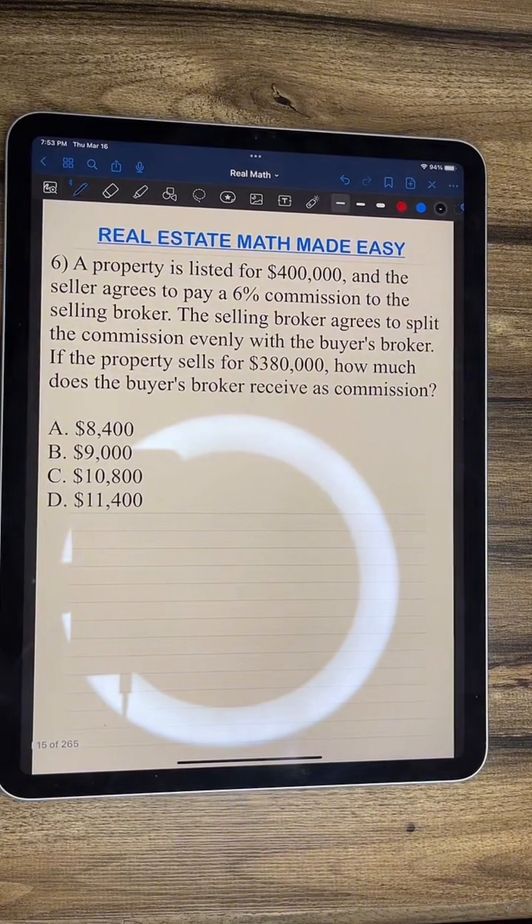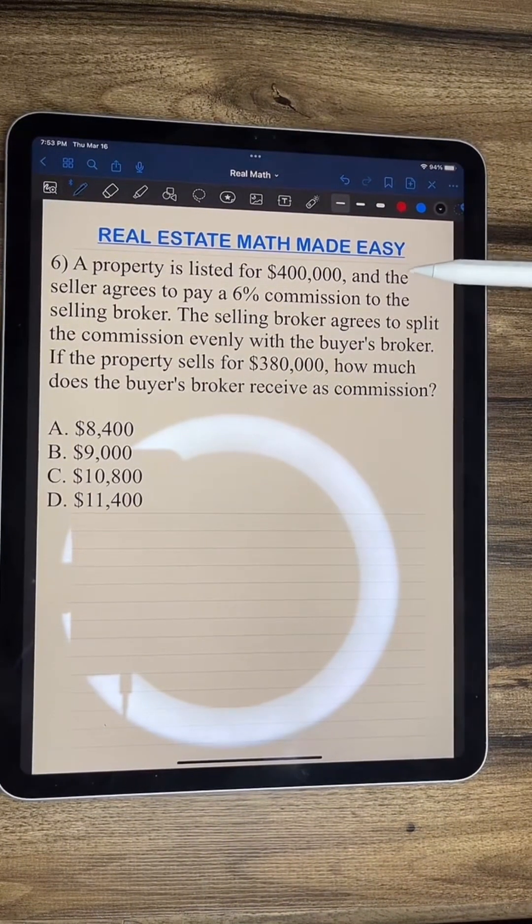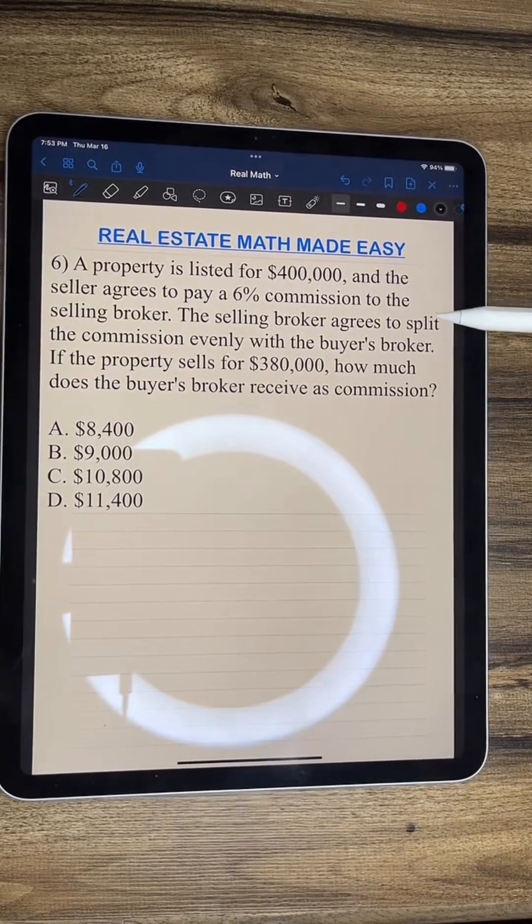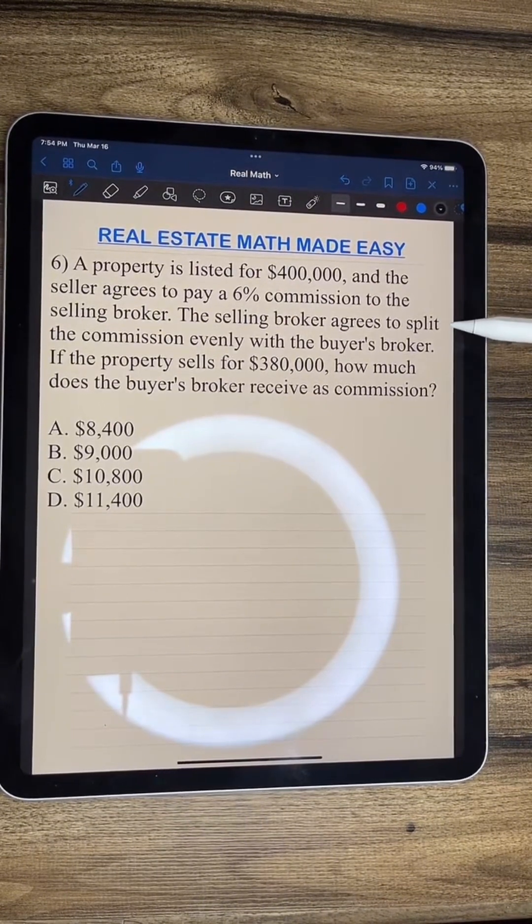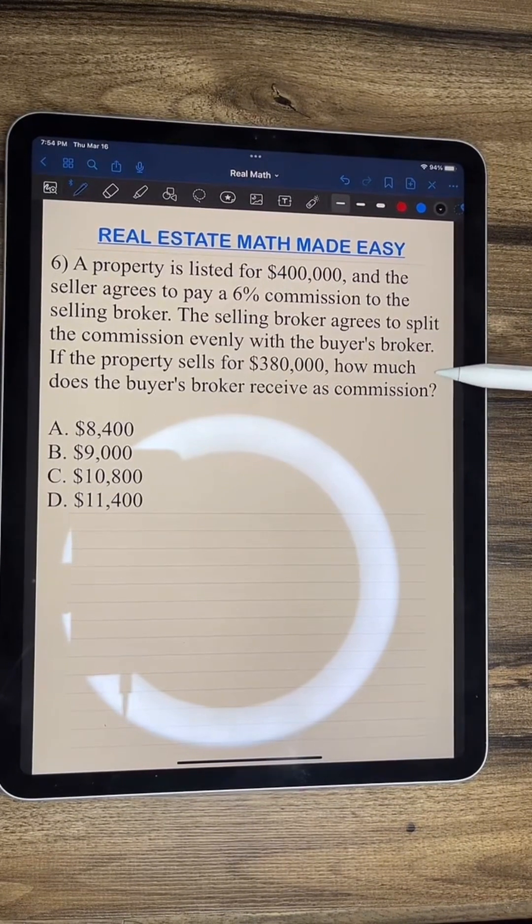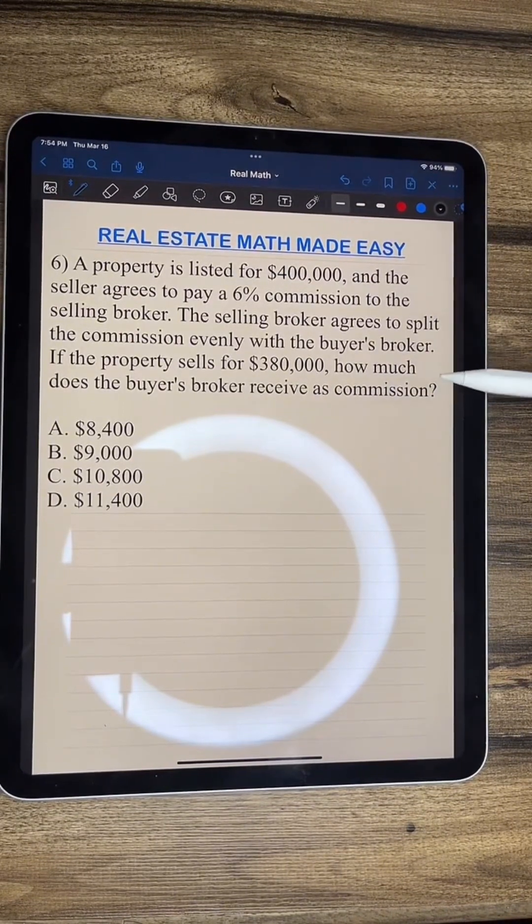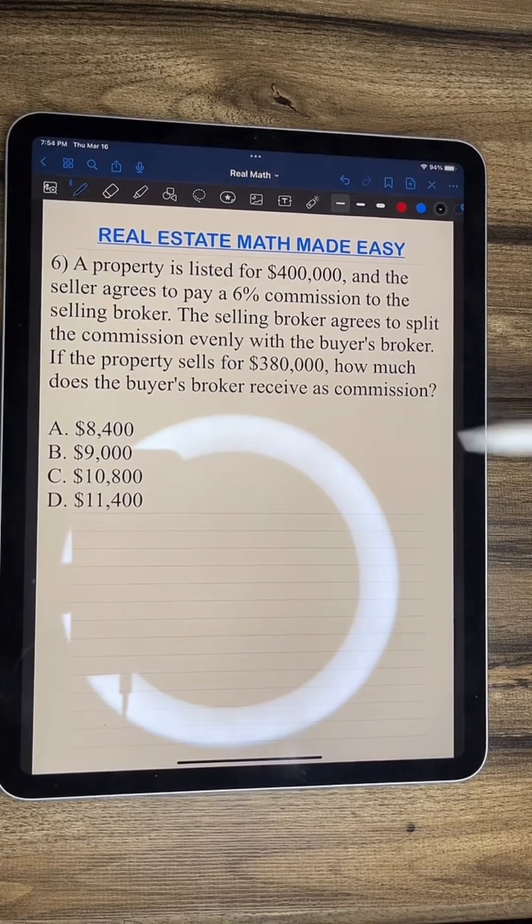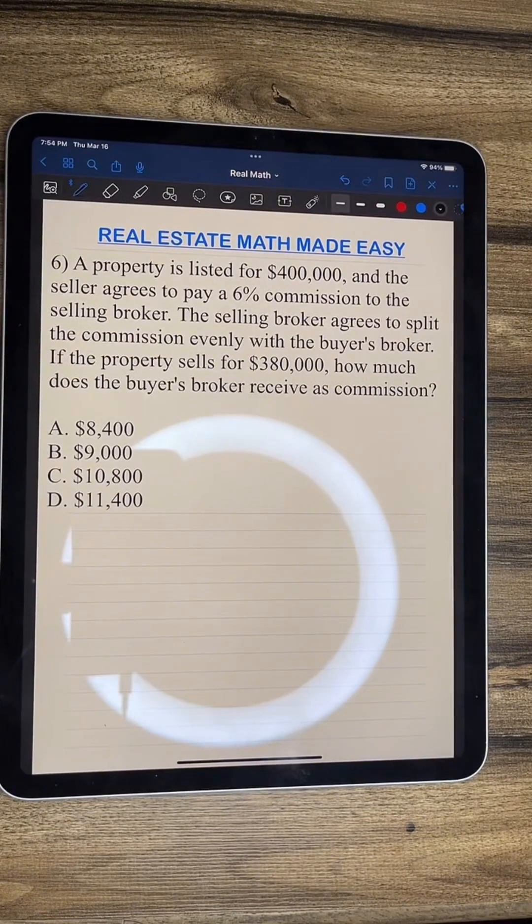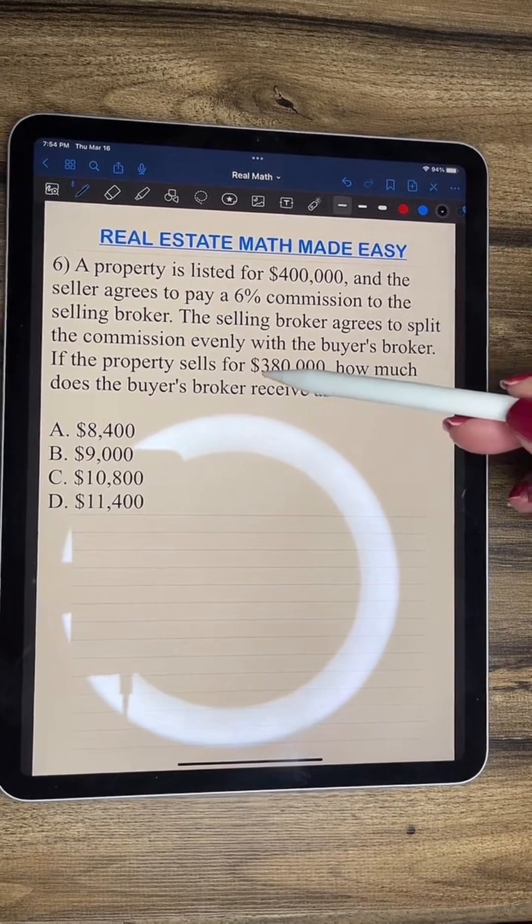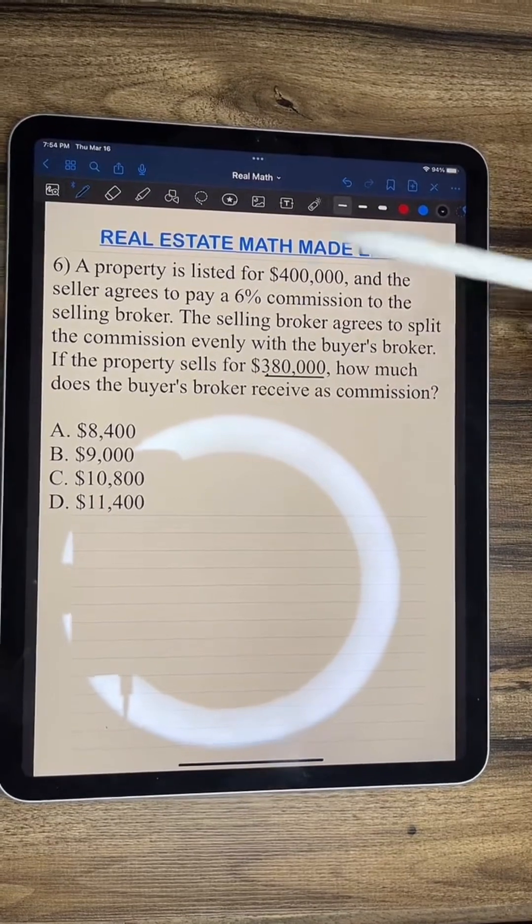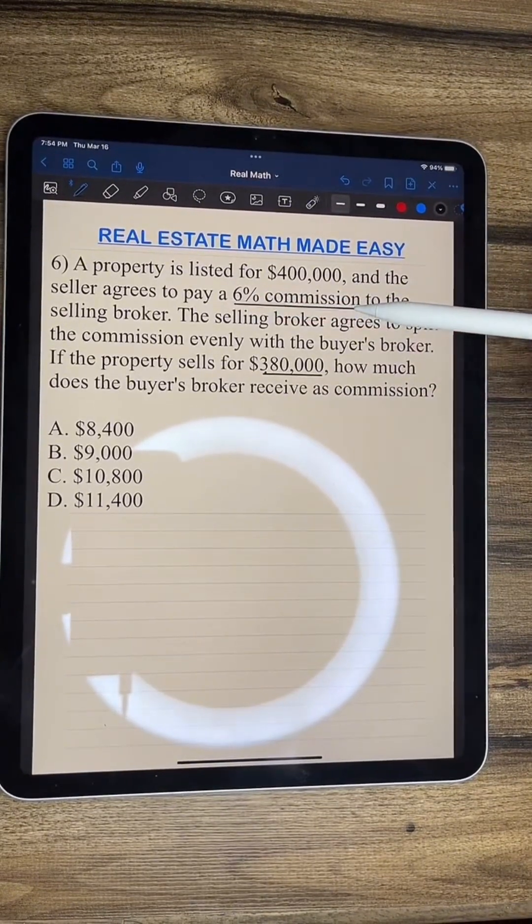Number 6. A property is listed for $400,000, and the seller agrees to pay a 6% commission to the selling broker. If the property sells for $380,000, how much does the buyer's broker receive as commission? All right, so remember, whenever you're dealing with commission, you're dealing with what the house sold for.